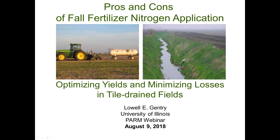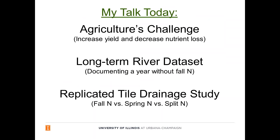All right, let's start. Good morning, everyone — it's good to be with you. This is a great opportunity for me to share some of our data from our ongoing on-farm research. We're looking at timing of nitrogen application, and this talk today is going to be focusing on the influence of fall nitrogen application on tile nitrate loss and the associated impact on water quality. On this first slide I'm showing anhydrous ammonia going on last fall — that's Eric Miller in the tractor, a participating farmer with us. Today I'm going to talk about agriculture's challenge, which is to increase yields but yet decrease nutrient loss — the idea of sustainable intensification.